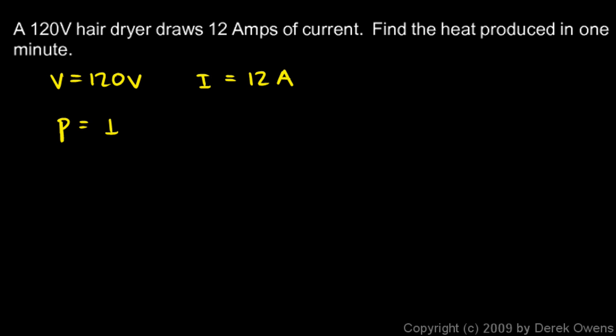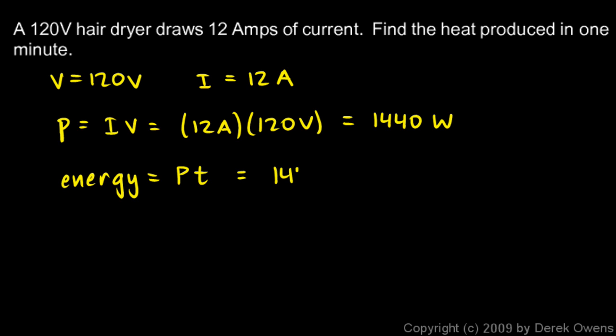So P is IV, that's 12 amps times 120 volts. That comes out to 1440 watts. Then the heat produced in one minute - the energy, I can say energy - is power times time.